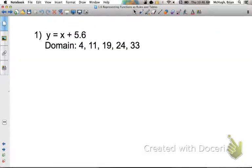Okay, this first example is a function rule, y equals x plus 5.6, and we're given a specific set of domain values, or another way to say domain values is to call them input values. Okay, input values are your independent variable.